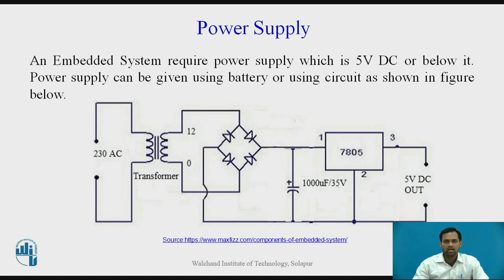After filtering, the signal is given to a voltage regulator IC. As shown in the figure, the voltage regulator IC is 7805, and at the output you can see 5V DC output. This 5V DC is used as the power supply in an Embedded System.